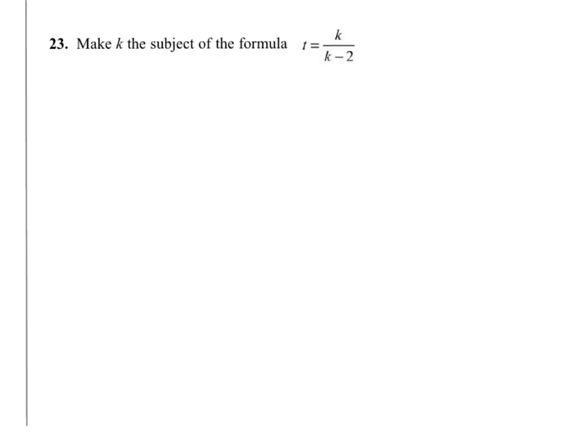We're required to make k the subject of the formula. We'll start by moving the k minus 2, which is dividing k, over to the left of the equals sign, and it will become a multiplier.